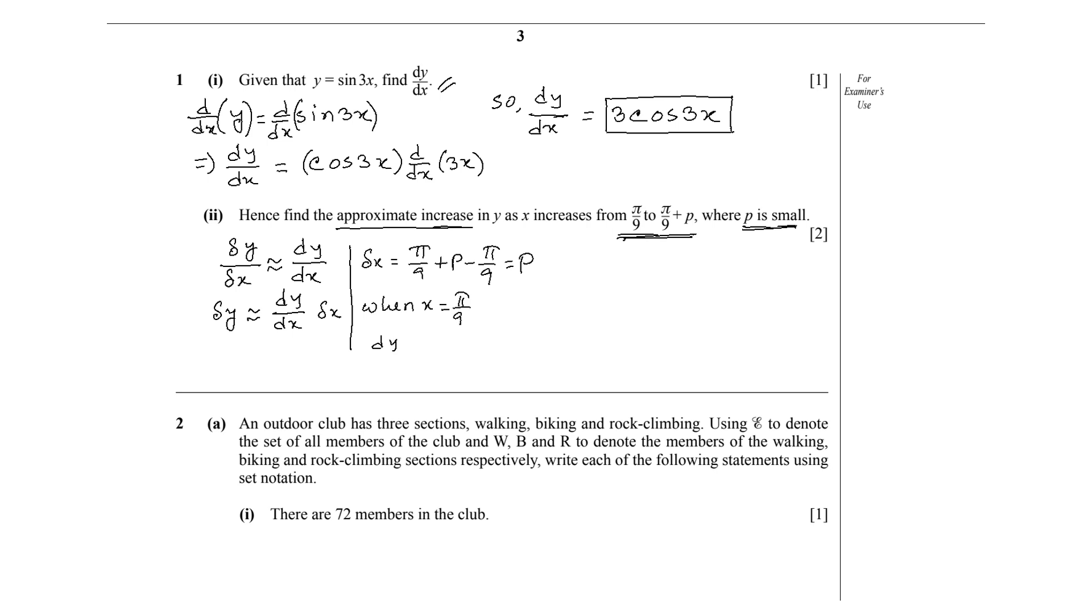So let's write: when x equals π/9, at that time dy/dx should be 3 times cos(3 times π/9). 9 divided by 3 is 3, so we can write in the next line dy/dx equals 3 times cos(π/3).